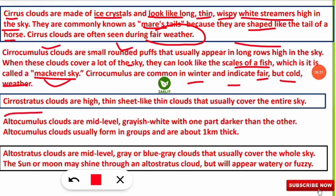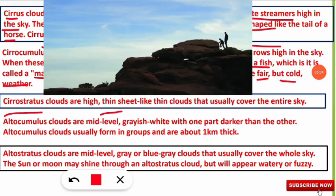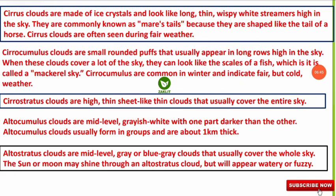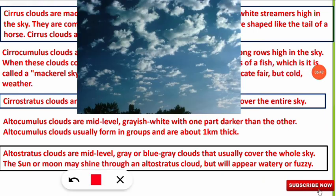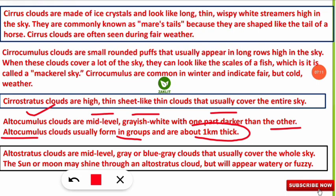Cirrostratus clouds are high, thin, sheet-like clouds that usually cover the entire sky. Next, altocumulus clouds are mid-level clouds that are grayish to whitish in color, with one part darker than the other — that is their peculiar characteristic. Altocumulus clouds usually form in groups and are about one kilometer thick.